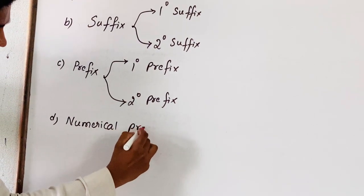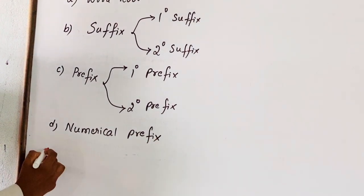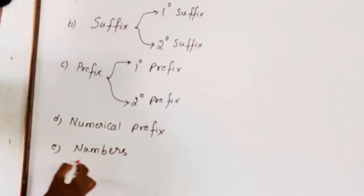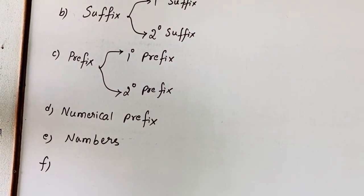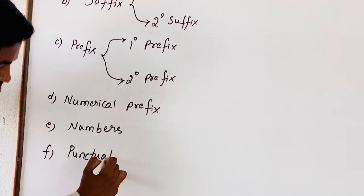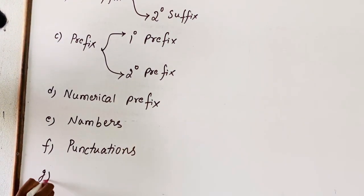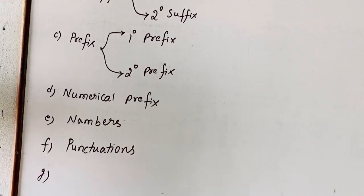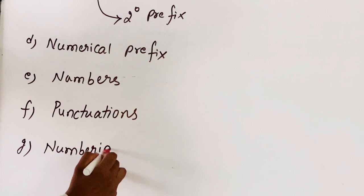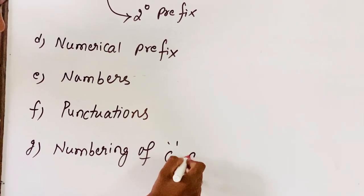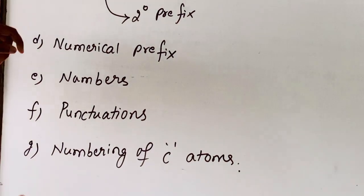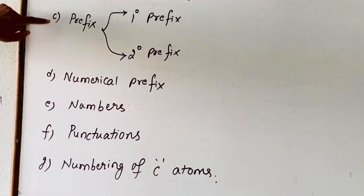Coming to D, that is numerical prefix. And E, which represents numbers. F is punctuations. And last but not least, that is G — numbering of carbon atoms. Now in the earlier classes, we have discussed A, B, and C: their classification, rules, and the priority order.